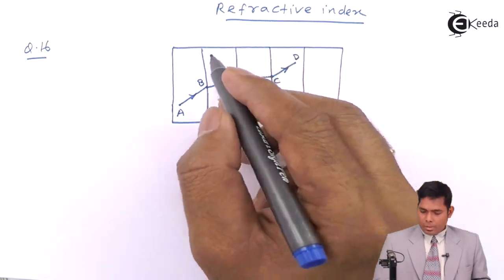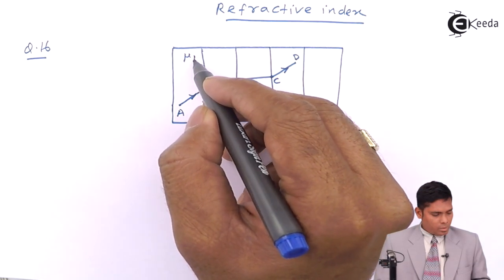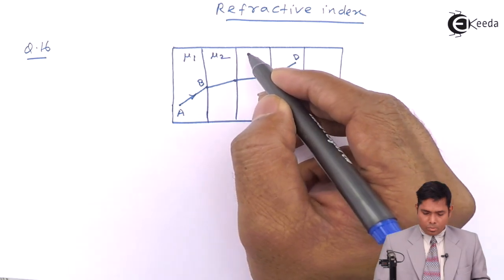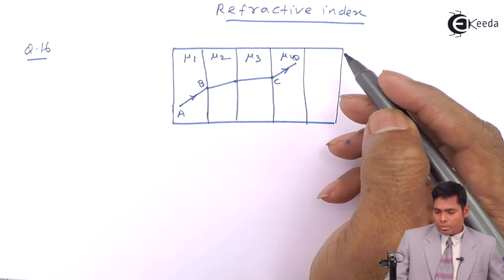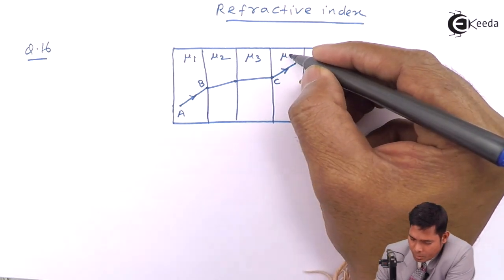This medium has refractive index mu1, this is mu2, this is mu3, this is mu4. So these are the refractive index mu4.